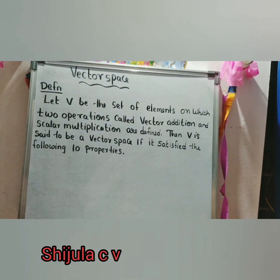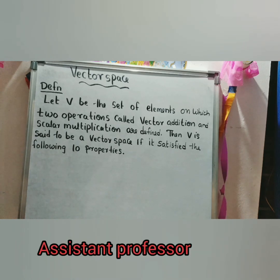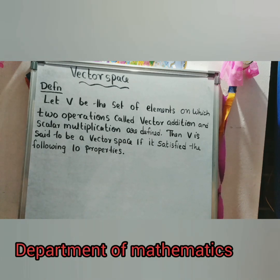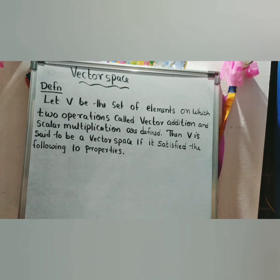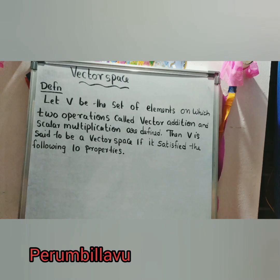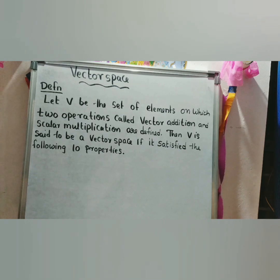Let V be the set of elements on which two operations called vector addition and scalar multiplication are defined. Then V is said to be a vector space if it satisfies the following 10 properties.